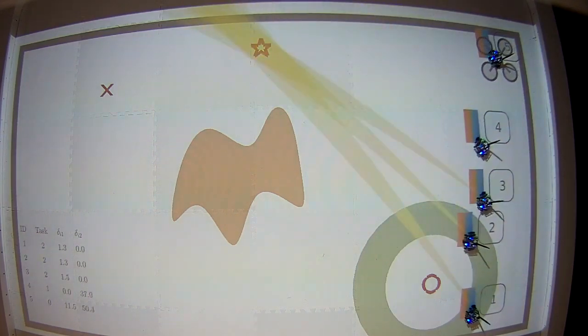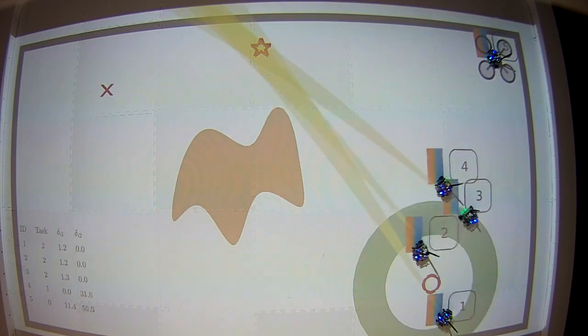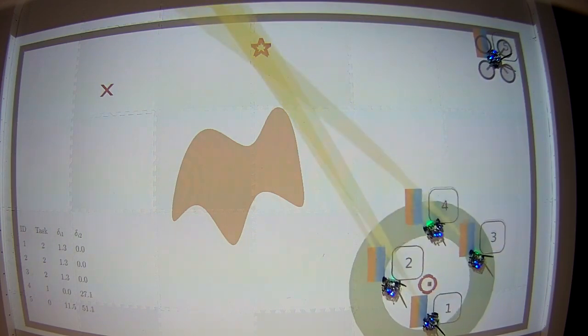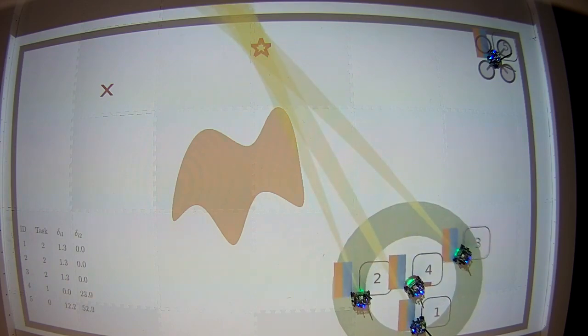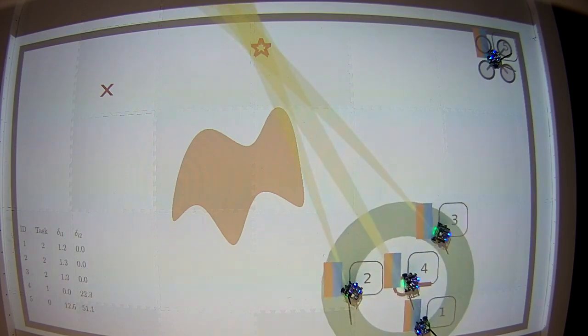As we can see, robot 4 starts navigating towards the red cross, along the dashed path, while being escorted by robots 1, 2 and 3, which point their cameras, the yellow beams, towards the red star.